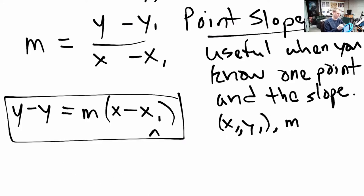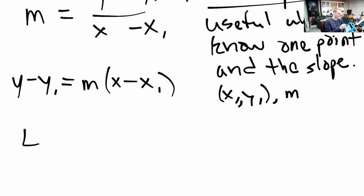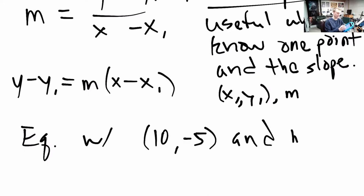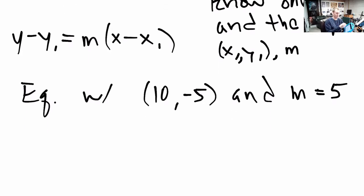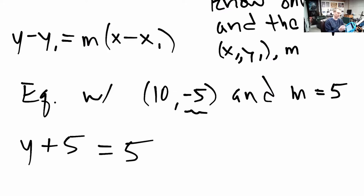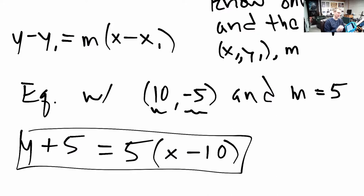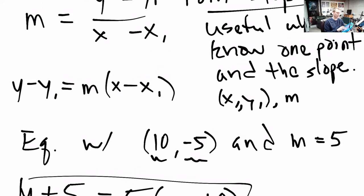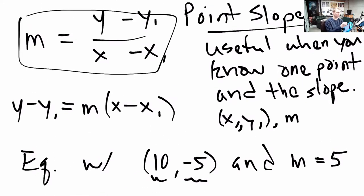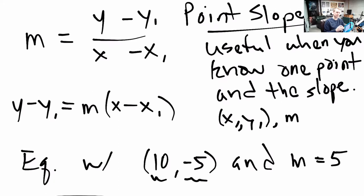For example, what is the equation of a line with the point (10, -5) and slope 5? We plug in: y minus y1 — so y plus 5 — equals 5, that's the slope, times (x minus 10), that's the x1. This is the equation for that line that goes through that point and has that slope. This is the point-slope form, derived straight out of the slope formula. It's useful when you only know one point.